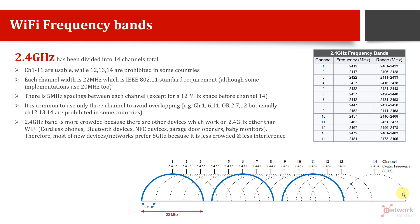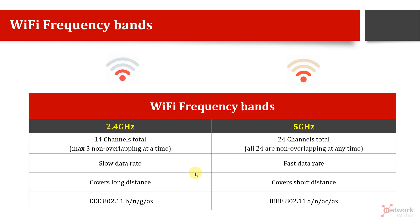In most countries, channels 12, 13, and 14 are not allowed, which is why we don't include them when discussing non-overlapping frequency bands. So for 2.4 GHz, we have three non-overlapping channels: 1, 6, and 10.